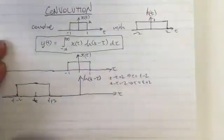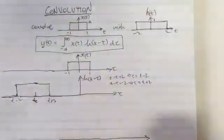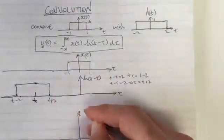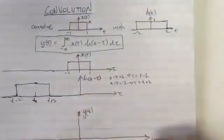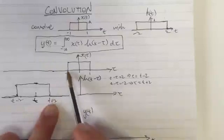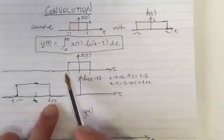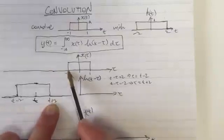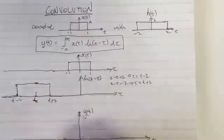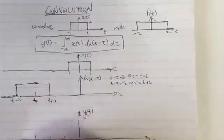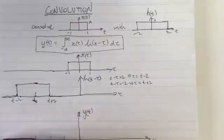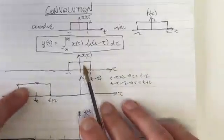I'll draw the answer as a function of t, since we're plotting y(t). For t plus 2 less than minus 1, that means t less than minus 3. So for all values of t less than minus 3, the answer is 0 because the two functions don't overlap.